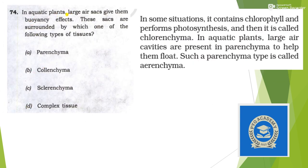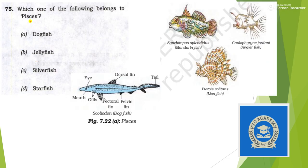Next: in aquatic plants, large air sacs give buoyancy — these sacs are surrounded by which type of tissue? They are surrounded by parenchyma, a permanent tissue. In aquatic plants, large cavities are present in parenchyma to help them float — this type is called aerenchyma. But the question asks about the main tissue type, which is parenchyma. Answer is option A.